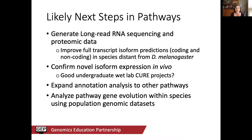Eventually we'll expand our analysis to other pathways beyond insulin — we want to think more generally about how pathway properties, such as pathway structure, influence gene evolution. Within my lab, and potentially developing into GEP projects, we'll also think about within-species gene evolution using population genomic datasets, since we expect a relationship between the amount of variation observed within species and the divergence we see between species.